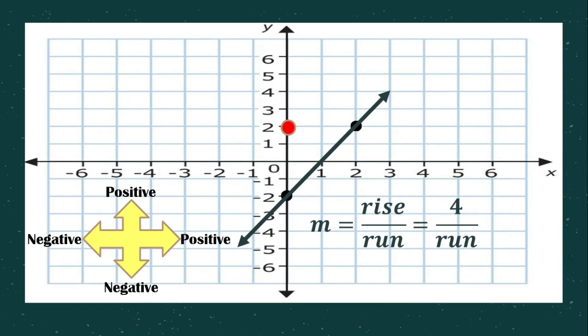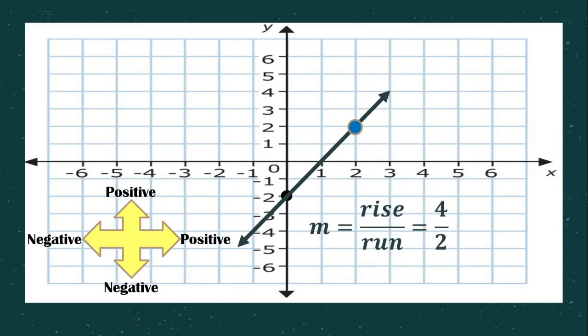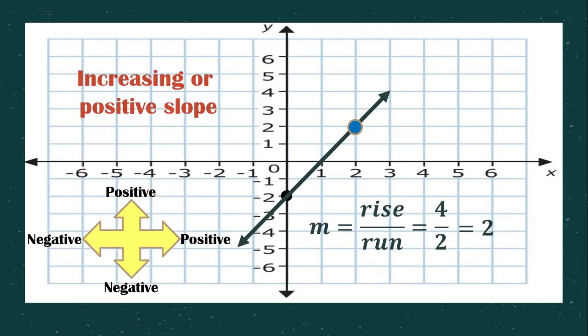Starting from the same point, we count the run until we reach the other point: one, two. So our run is two. We have four over two; when we divide it, we get two. So our slope is positive two, meaning this graph is increasing or has a positive slope.